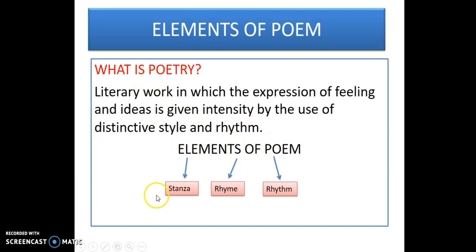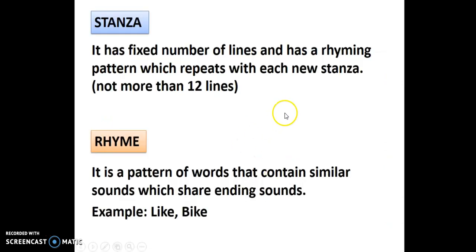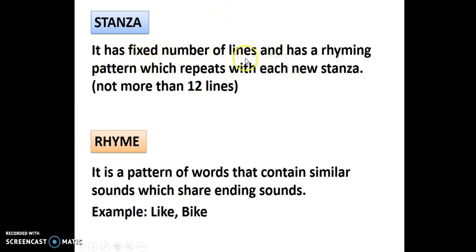The elements of poetry are: stanza, rhyme, and rhythm. Starting with stanza — it has a fixed number of lines, has a rhyming pattern which repeats with each new stanza, and it is not more than 12 lines. You may have seen or read poems in school, college, or university.